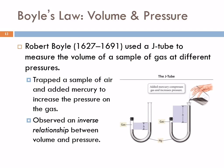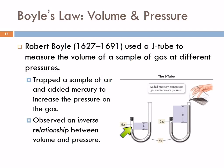Robert Boyle lived back in the 1600s, before our country became a country, and he studied gases. He used a J-shaped tube to measure the volume of a sample of gas at different pressures, using a manometer with different levels of mercury. He sealed off a gas sample and measured the pressure difference from the difference in the columns of mercury. You can increase the pressure on that gas by pouring more mercury in.